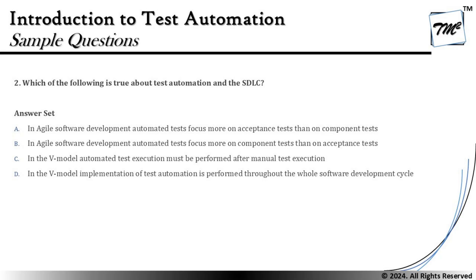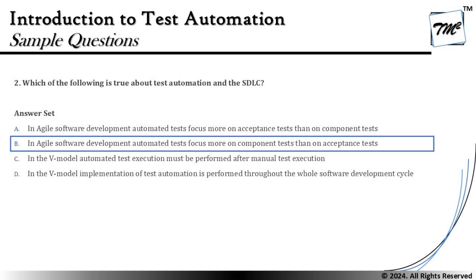The right answer for question 2 is B: in agile software development, automated tests focus more on component test than on acceptance test. Your knowledge, information, and practical exposure all come together to conclude the right answers during the examination. Feel free to comment below with any queries. Keep learning, keep exploring, and happy learning!